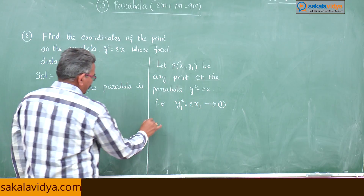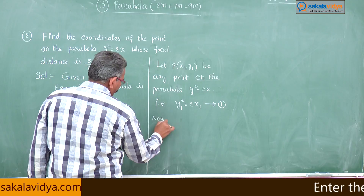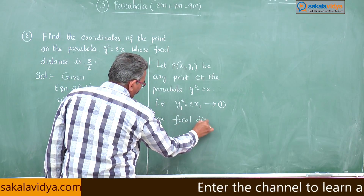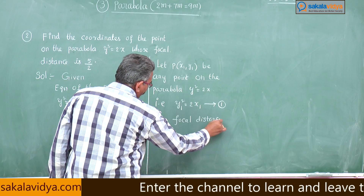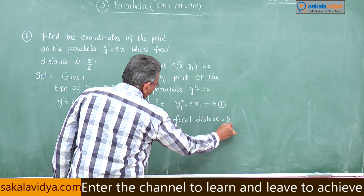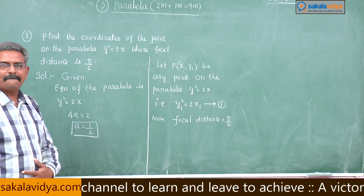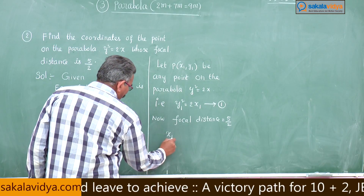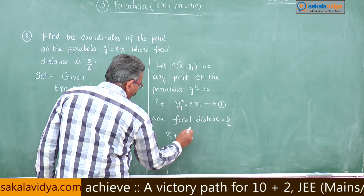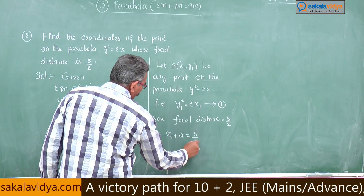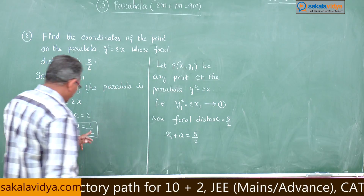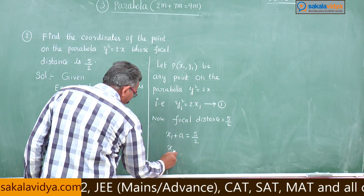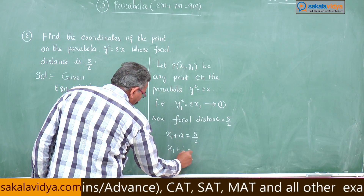The focal distance is given as φ/2. The focal distance formula is x₁ + a = φ/2, and a = 1/2. So x₁ + 1/2 = φ/2.